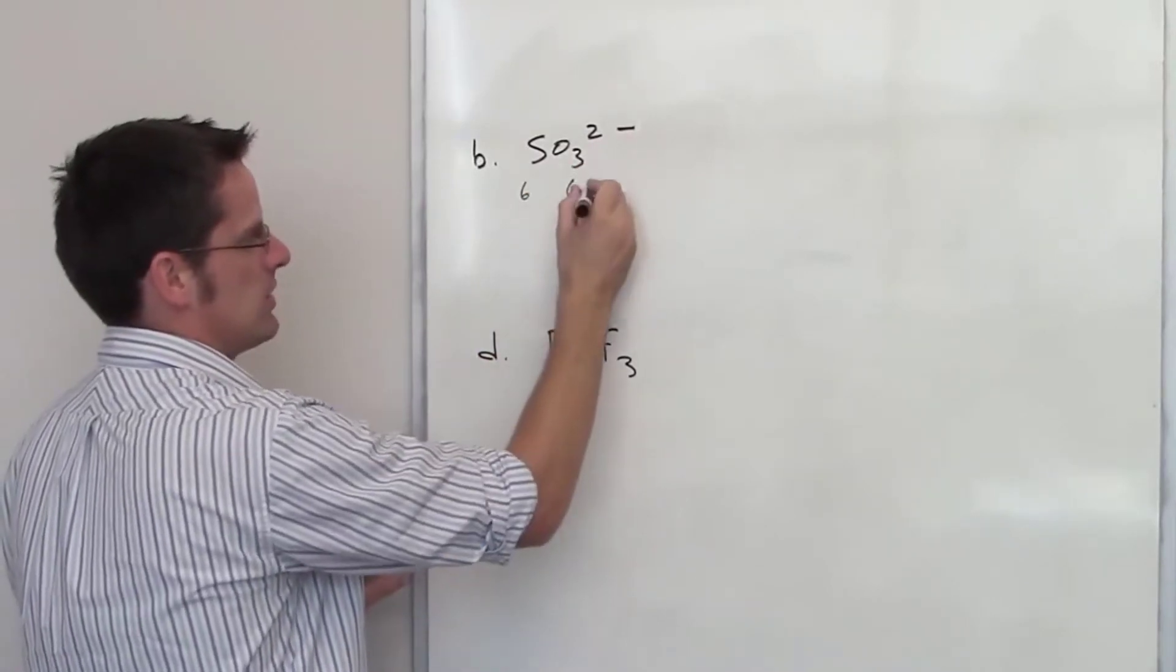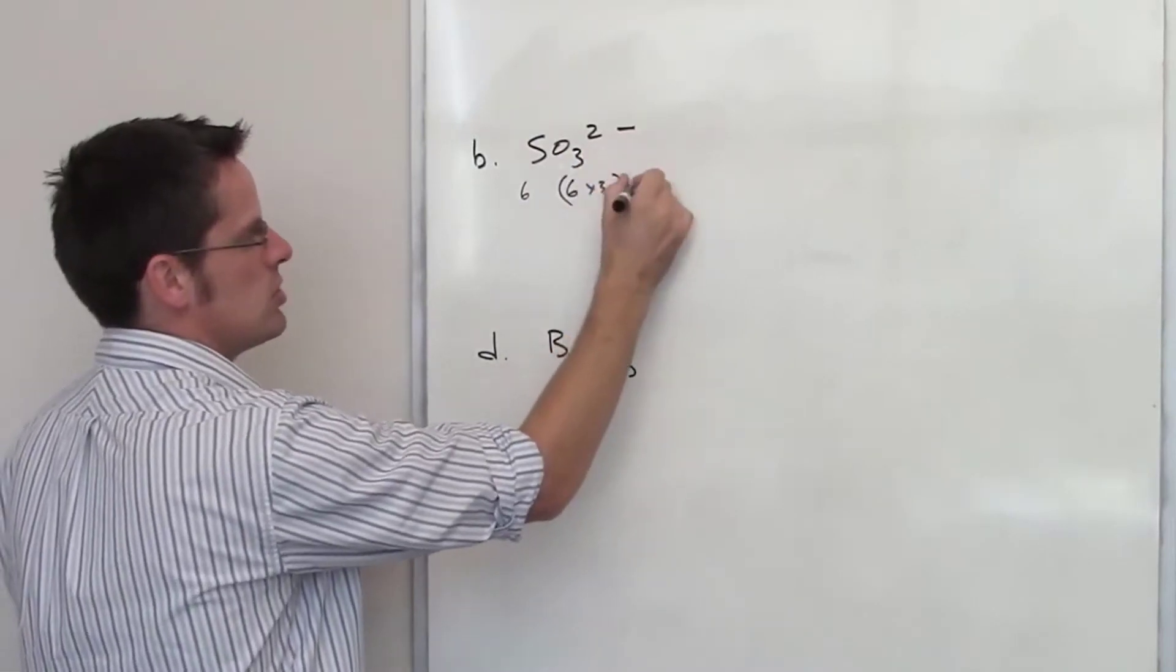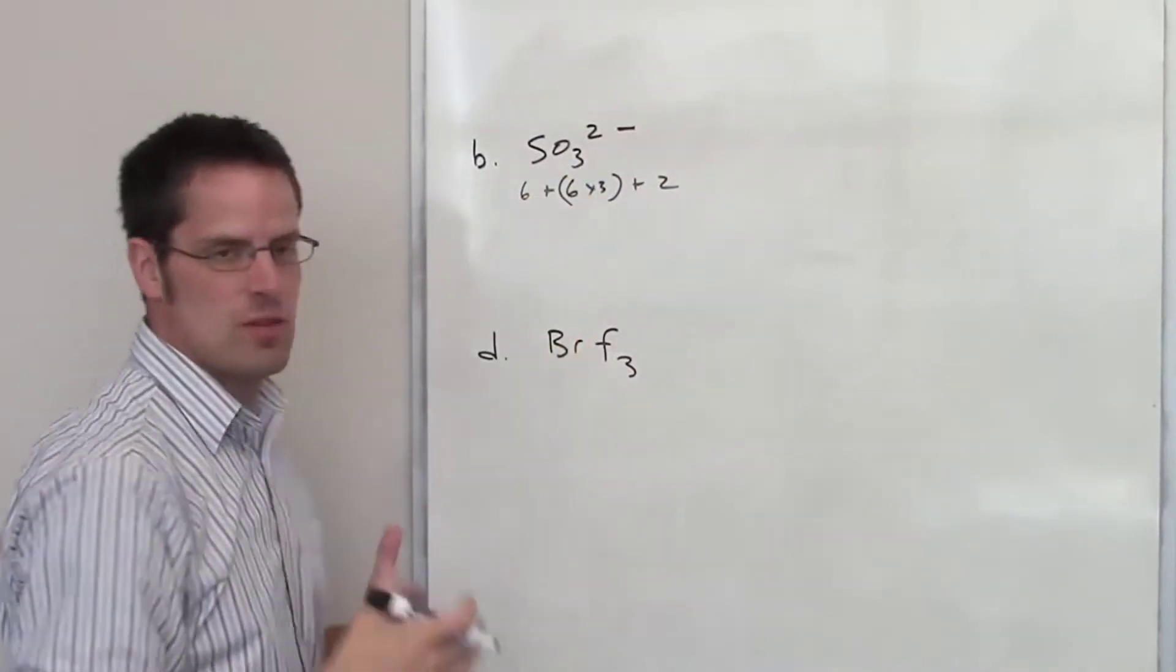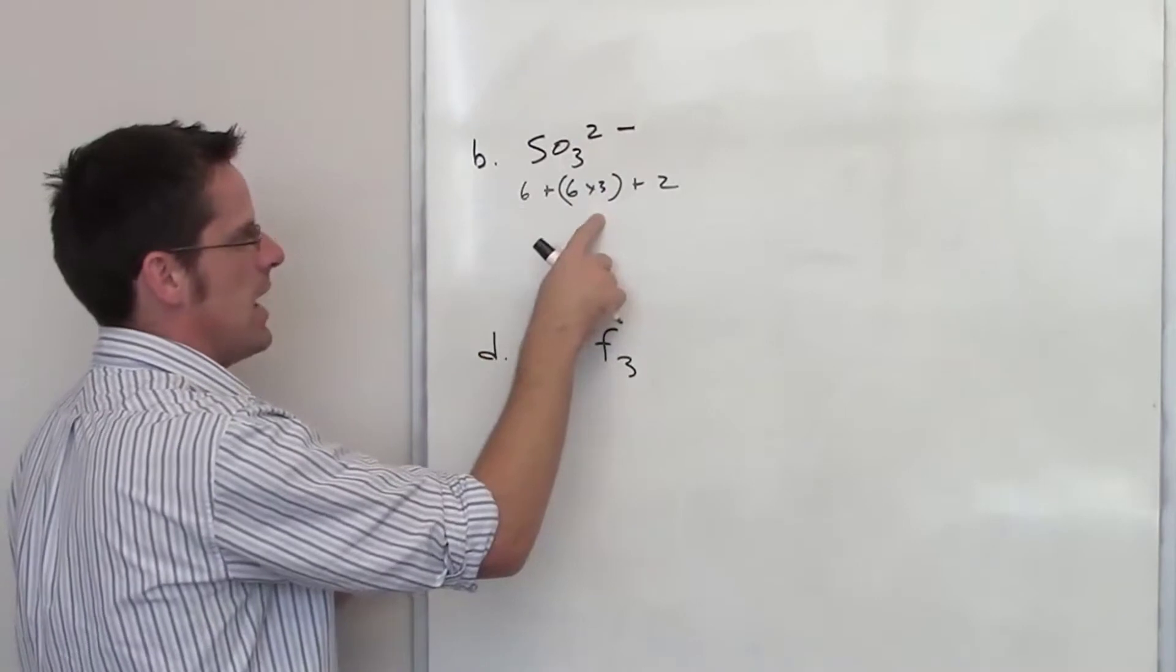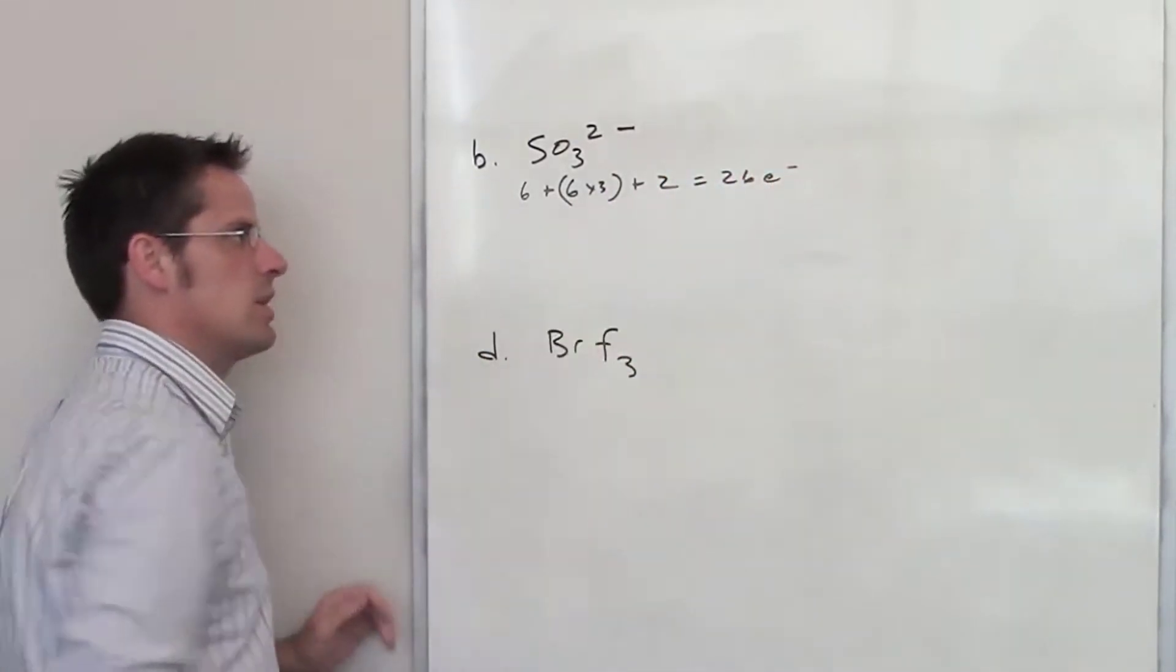There are three different oxygens here, so I'm going to have six electrons from each one. There's a negative two charge, which corresponds to the addition of two more electrons to the system. When I add all that together, I get 26 total electrons to play with.